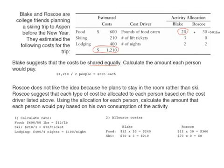For lodging, the rate is $100 per night and each person is staying two nights, so each person covers $200 in lodging costs.